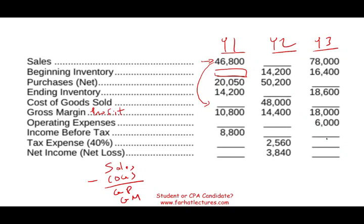Knowing this formula, I can immediately find cost of goods sold — I deduct 36,000 and I found cost of goods sold. Now, knowing cost of goods sold, I can find beginning inventory. I need to know this formula by heart as an accounting student: beginning inventory plus purchases minus ending inventory gives me cost of goods sold.